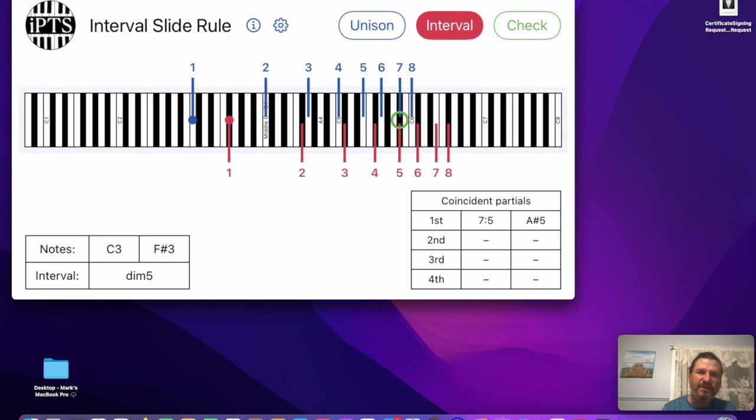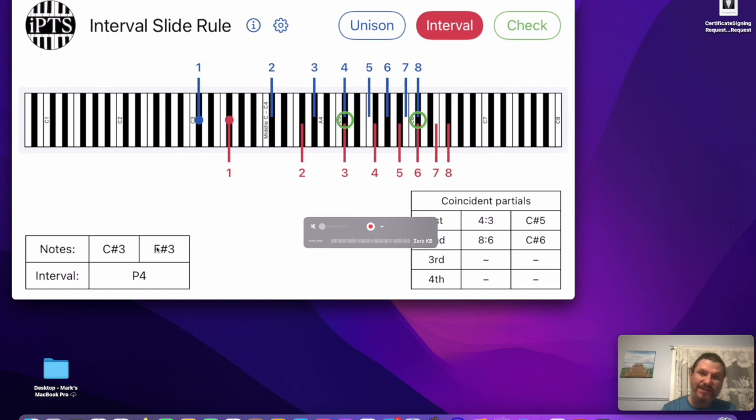So for example, let's say we take the, well, let's make it hard. Let's say it's a fourth, C sharp and F sharp. So on the bottom here, it tells you what the interval is. It tells you it's a perfect fourth. And then over here, it tells you the coincident partial. So the first coincident partial we're mostly concerned with is the 4-3 here. And if you want to impress your other piano tuner friends, you can just say, this is the 4-3 coincident partial for the fourth.